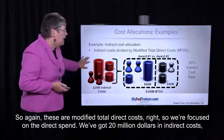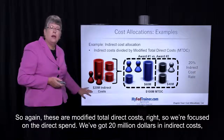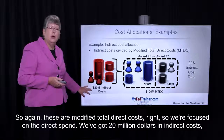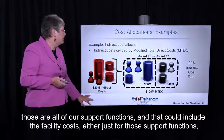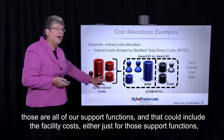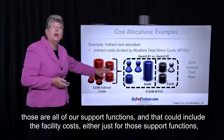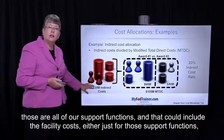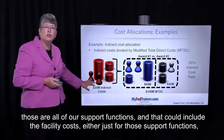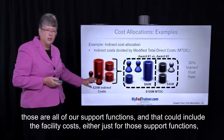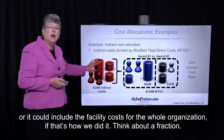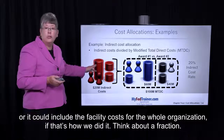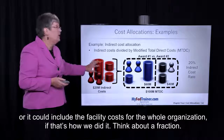We've got twenty million dollars in indirect costs — those are all of our support functions — and that could include the facility costs either just for those support functions, or it could include the facility costs for the whole organization, depending on how we structured it.